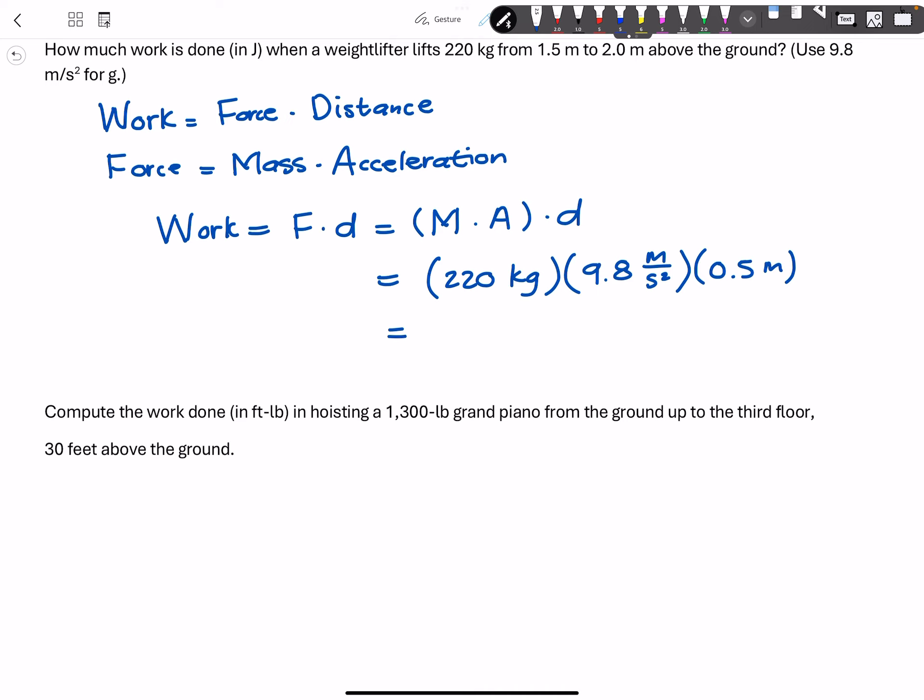Now I'm going to quickly grab my calculator and see what this is equal to. 220 times 9.8 times 0.5 is equal to 1078.